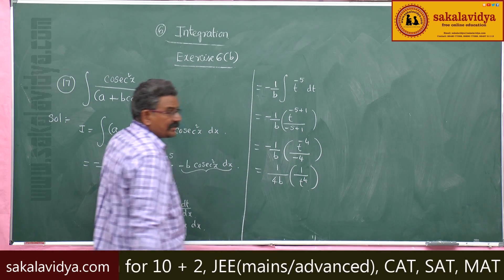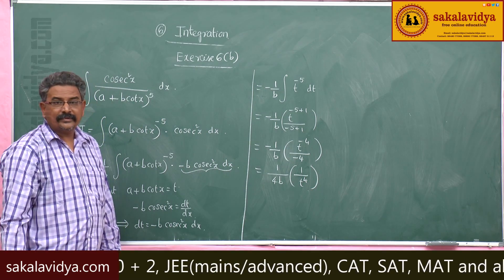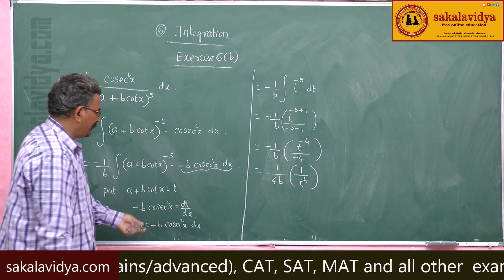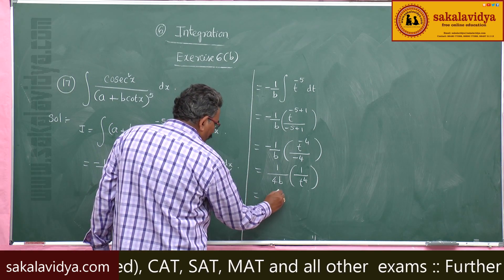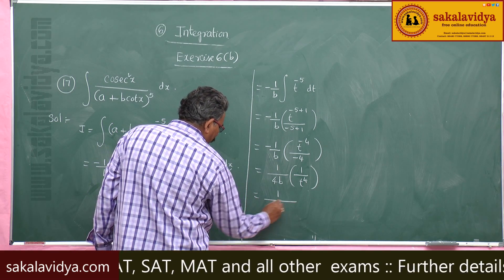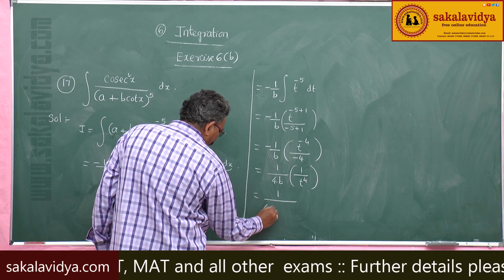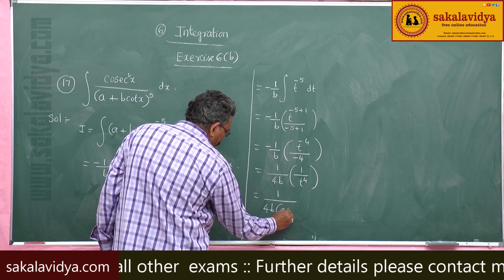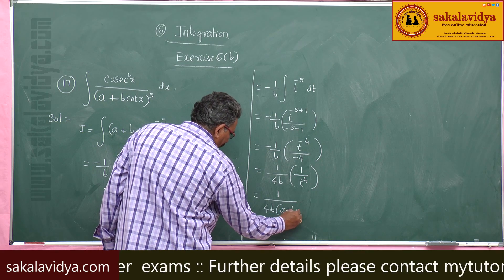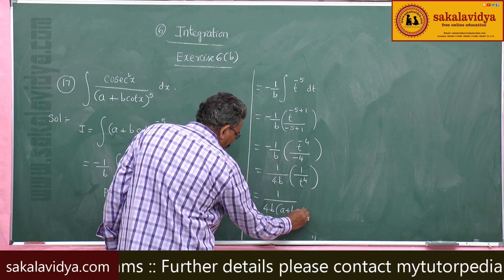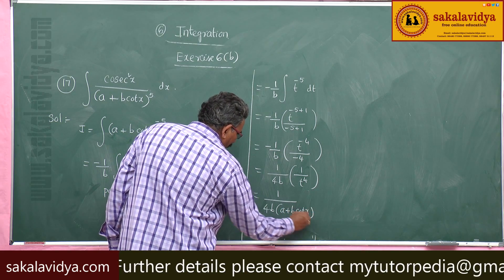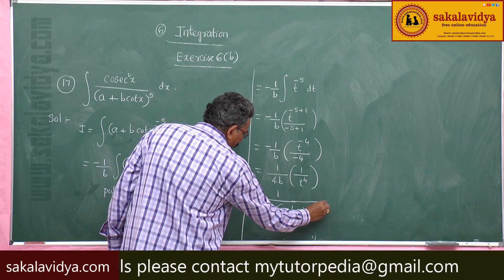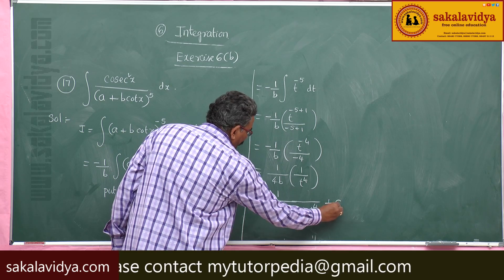What is t? t is nothing but a plus b·cot x. So the final answer is 1 over (4b) times (a plus b·cot x) raised to the power of 4, plus constant of integration.